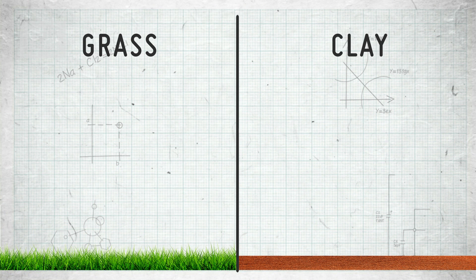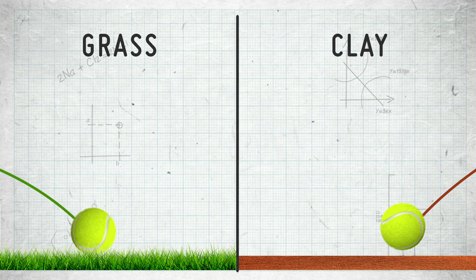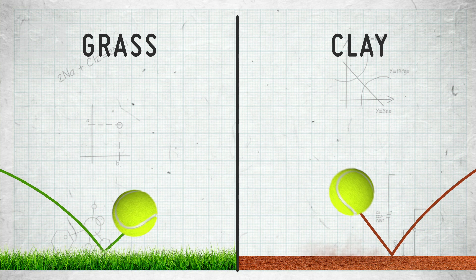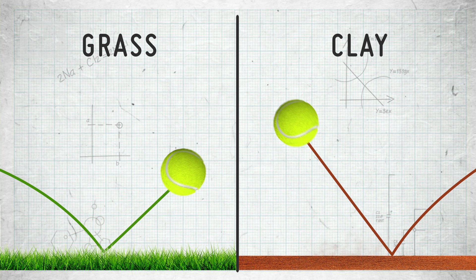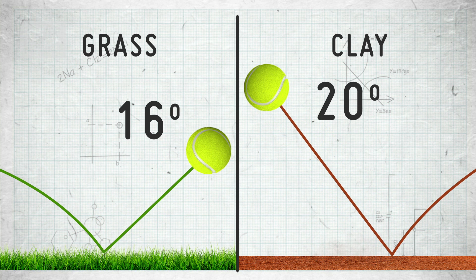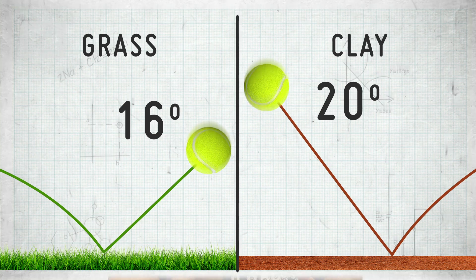Also the angle of the bounce is different. A ball coming in at 16 degrees on grass will bounce out at 16 degrees, but on clay it'll bounce much higher at about 20 degrees. That's because clay has what's known as a higher coefficient of restitution — basically it's a bit bouncier.